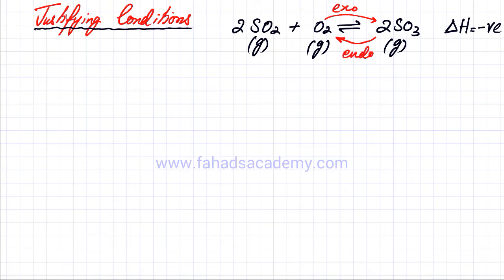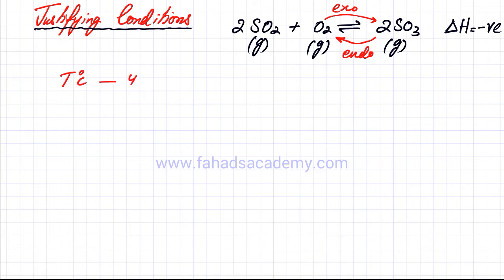We now need to justify the conditions stated in step 2. We stated that the temperature used was 450 degrees centigrade — that was the temperature used in this reversible reaction to obtain the best yield of SO3.